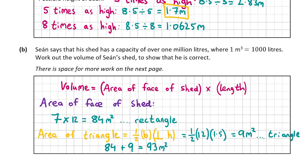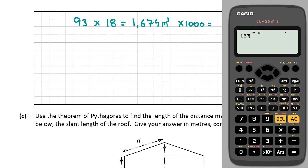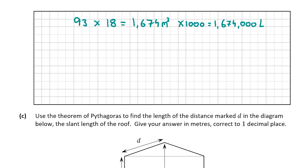We need the answer in liters to prove it's over one million liters. We're told 1 meter cubed equals one thousand liters, so we multiply 1,674 by 1,000 to get 1,674,000 liters — which is obviously bigger than 1,000,000. That's our answer for part B, worth 10 marks.